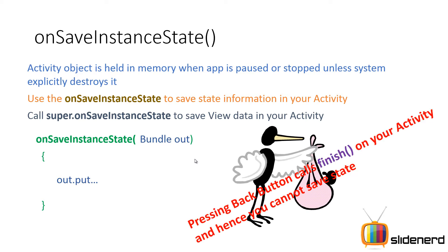One thing to note about the back button: you save information, but you cannot restore information when the back button is pressed, because your activity is actually finished. The Android operating system assumes that your activities are not needed anymore.